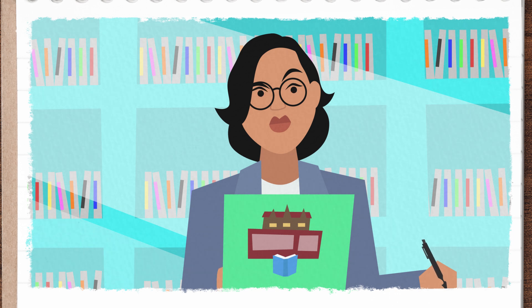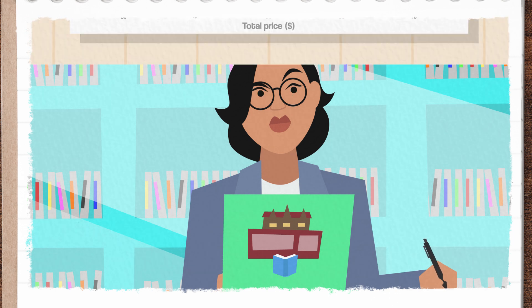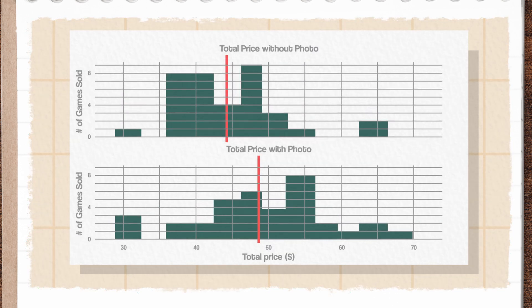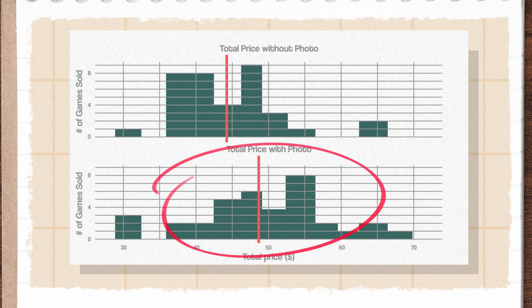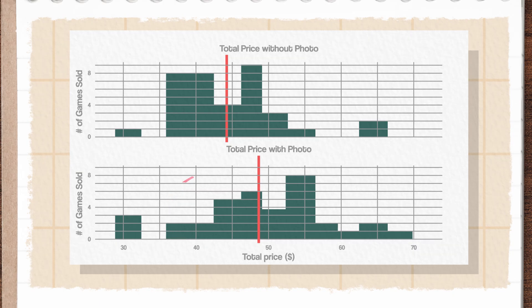I'll take a random sample of 36 video games with a picture on the ad and 36 without, then keep track of the final selling prices of all the games in my two samples. Afterwards, I can compare the average selling price in both groups. The photo group does tend to have higher bids on average, but I'm not sure if that difference is considered a lot — how spread out the data are within each group is also something to think about. This leads me to hypothesis testing, which is the statistical process that helps us determine whether we have enough evidence to support an argument.